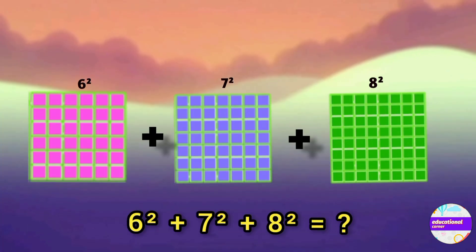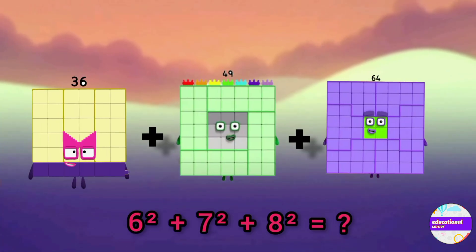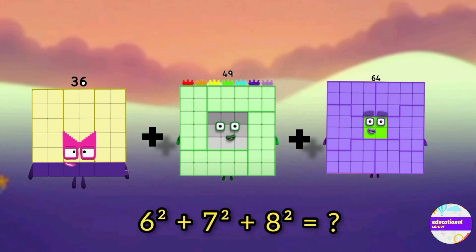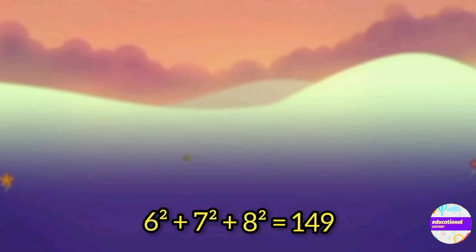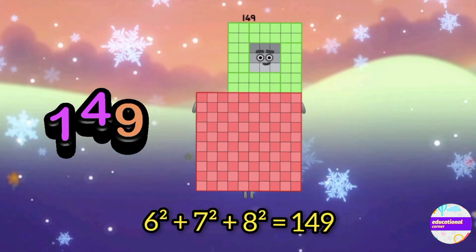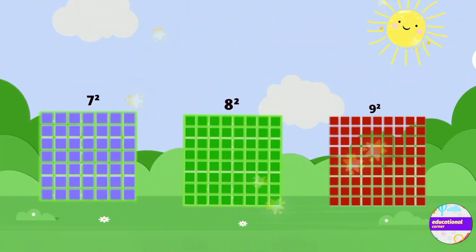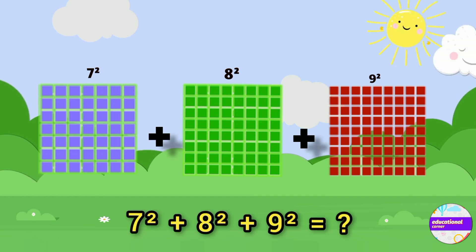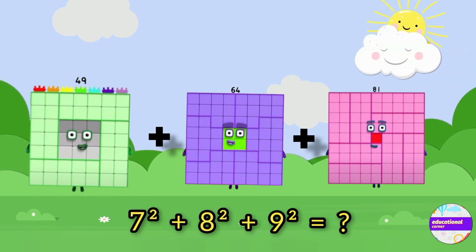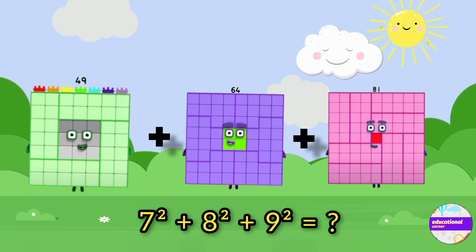The next sequence is six, seven, eight squares: thirty-six plus forty-nine plus sixty-four — the answer is one hundred forty-nine. The next one is seven, eight, nine: forty-nine plus sixty-four plus eighty-one — that is one hundred ninety-four.